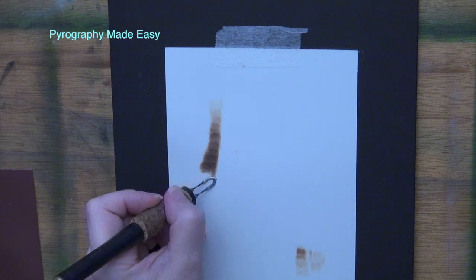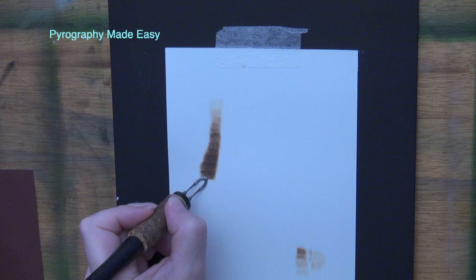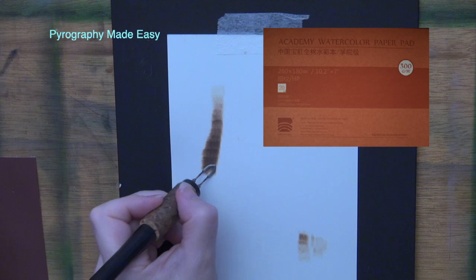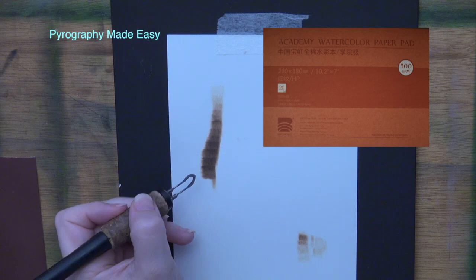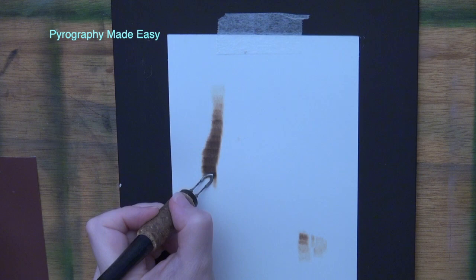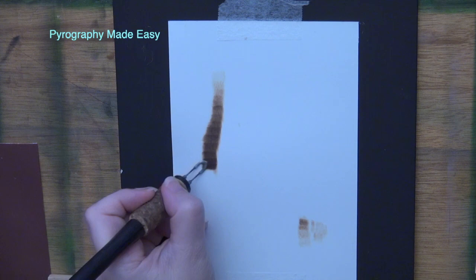You should be burning on the same paper that you will be using to create the value finder with. I am using 140 pound hot pressed 100% cotton watercolor paper by Medin. I will put a link to the paper in the description below. I don't know if this is the best paper to burn on but I was happy with the results I got.